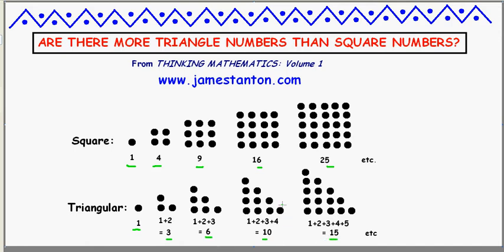I want to know — which has more numbers? Are there more square numbers than triangular numbers? Are there more triangular numbers than square numbers, or maybe the count of each is equal? In fact, in some sense, the question is silly, because clearly there are infinitely many square numbers and infinitely many triangular numbers. So in that sense, there are equally many of each.